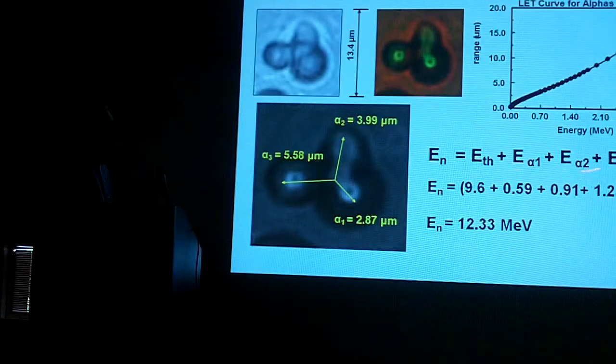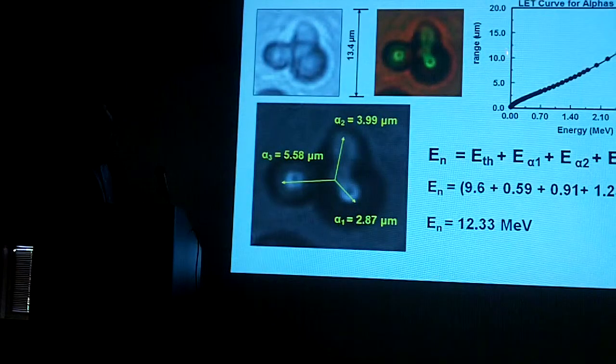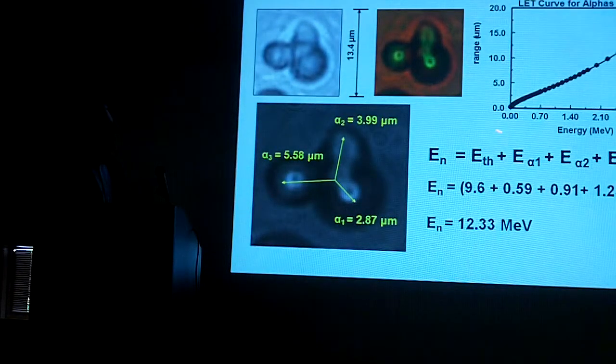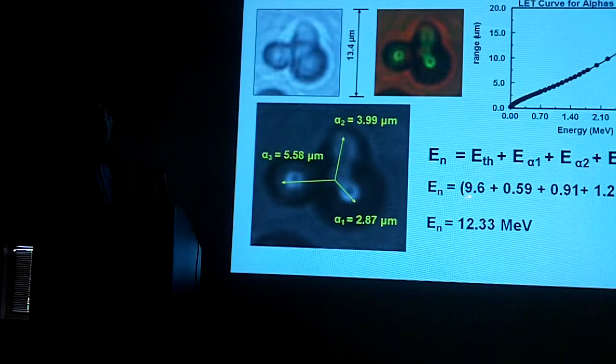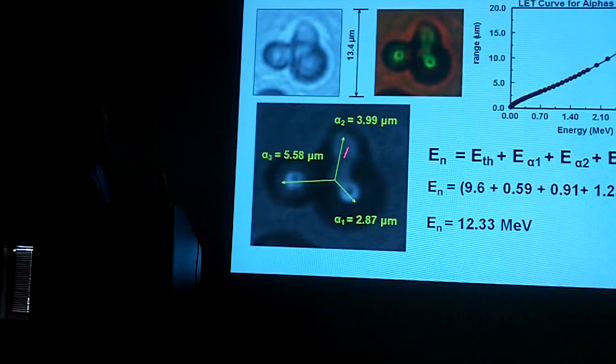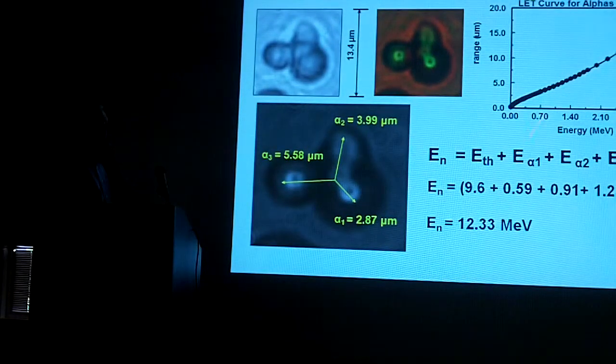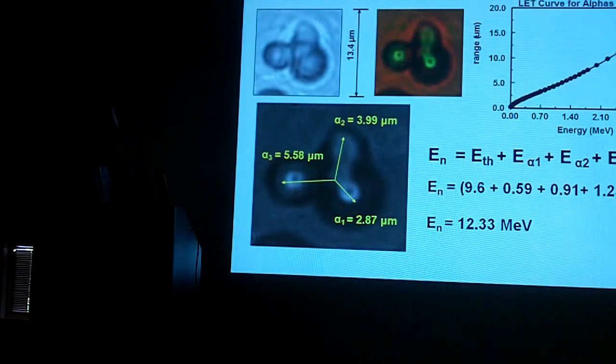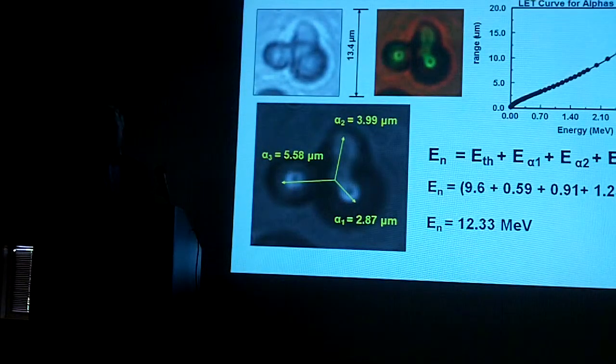You do the LET curve for this. LET curve for alphas, I had this in an earlier, but repeated here. You take the 9.6 MeV that it takes just to shatter the carbon, and then you take the distance here. Now, you apply that to the LET curve and you get the number of MeV. And in this case, approximately 12.3 MeV.